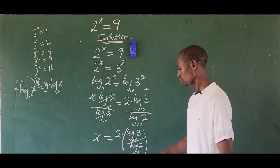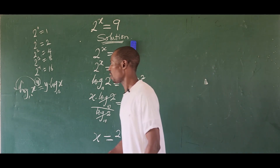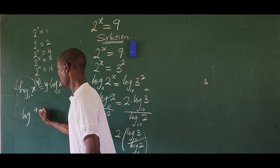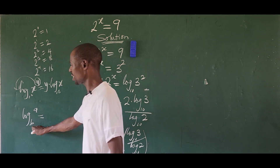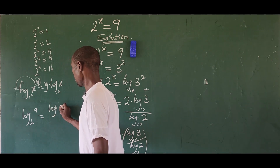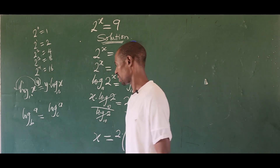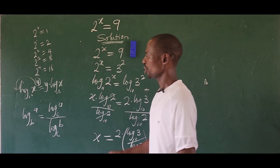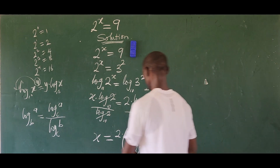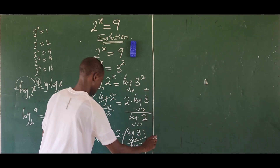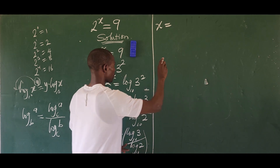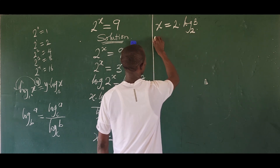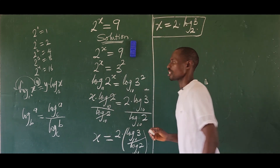We apply what is called the change of base rule. The law states that log of a base b can be rewritten as log of a base c divided by log of b base c, where c is the new base number. Applying this to our expression, x equals 2 times log base 2 of 3. This is the final form of our answer.